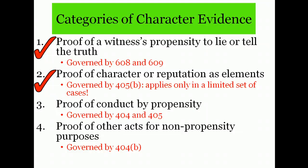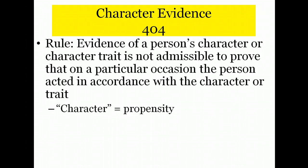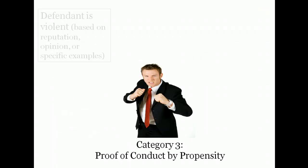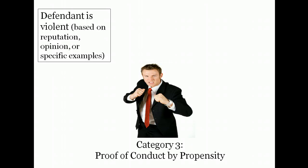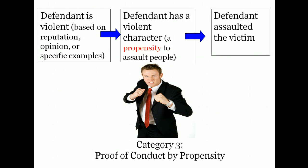Let's move now to the rule itself, which says that evidence of a person's character or character trait is not admissible to prove that, on a particular occasion, the person acted in accordance with the character or trait. This is the core prohibition of Rule 404. The terms character or character trait simply refer to a person's propensity to do something. So the rule prohibits using evidence that a person has a propensity to behave in a certain way to prove that he behaved in that way on this particular occasion. Applied to our assault defendant, the rule prohibits evidence that the defendant is violent — to show a propensity for violence — and thus that he was violent on the occasion when this victim was assaulted.